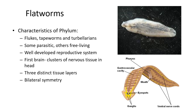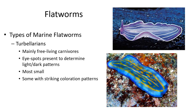Marine flatworms, also called turbellarians, are mostly free-living carnivores, very colorful with distinct patterns. They can detect light and dark with their eye spots but otherwise can't see very well, and most of them are really small.